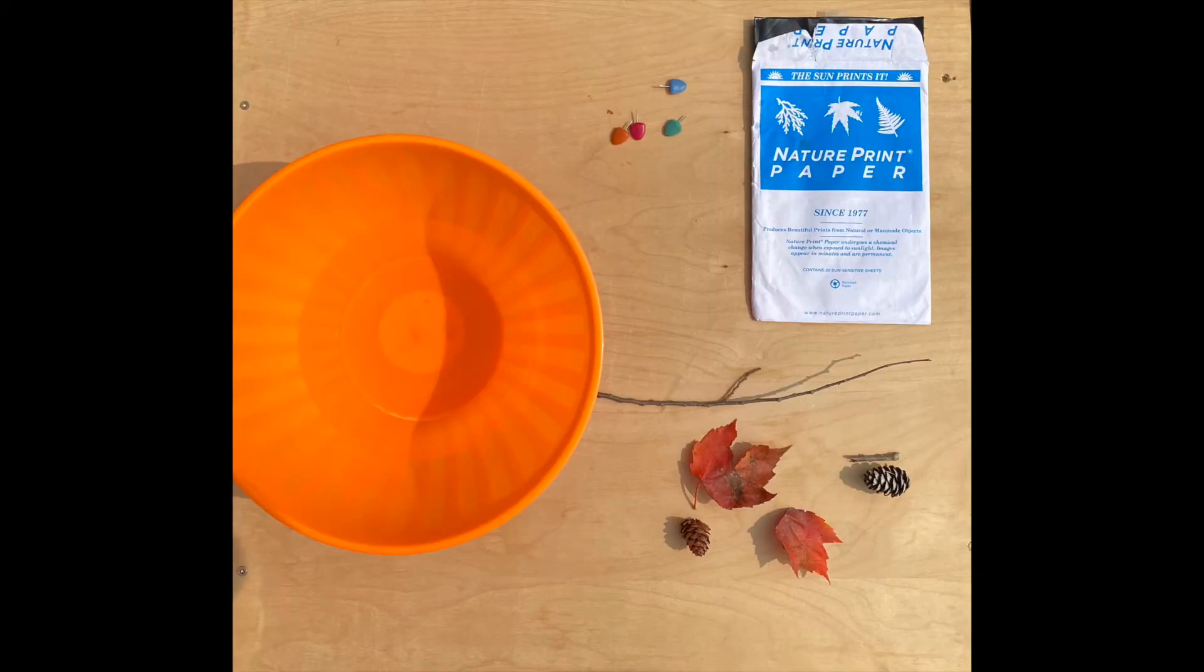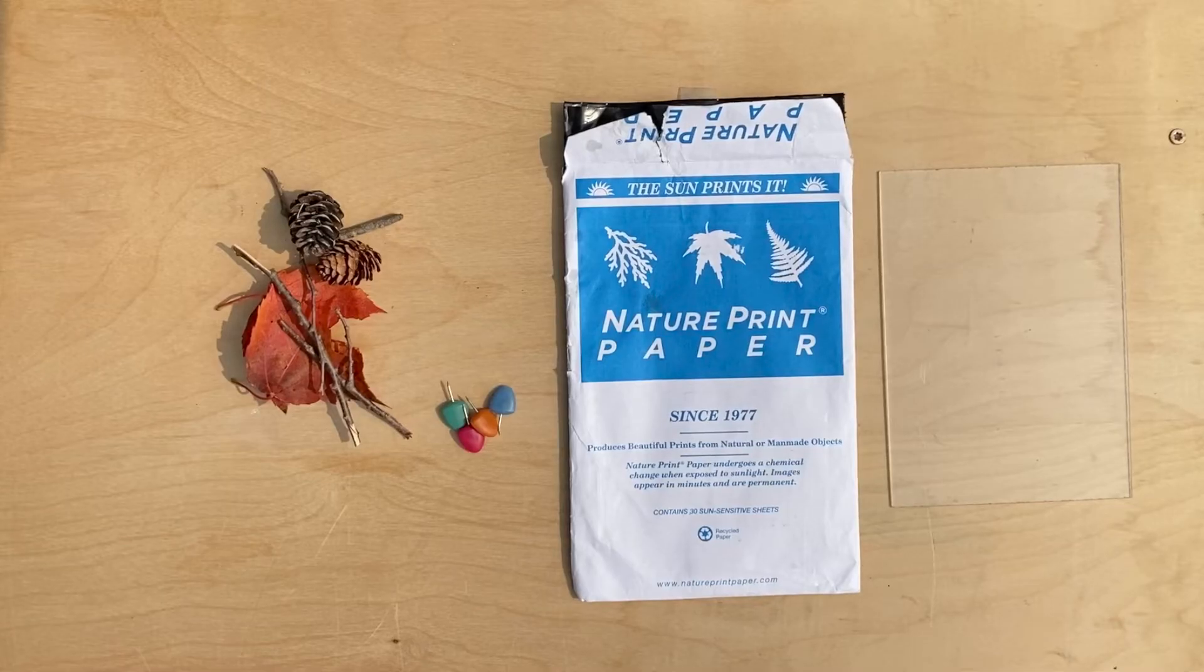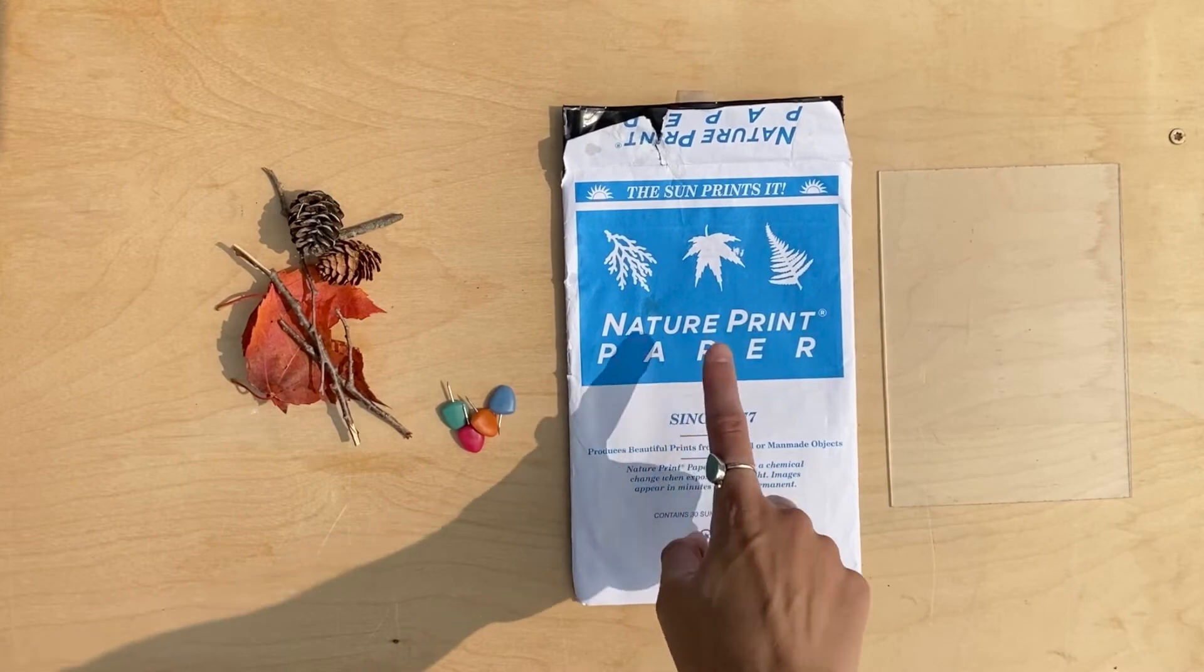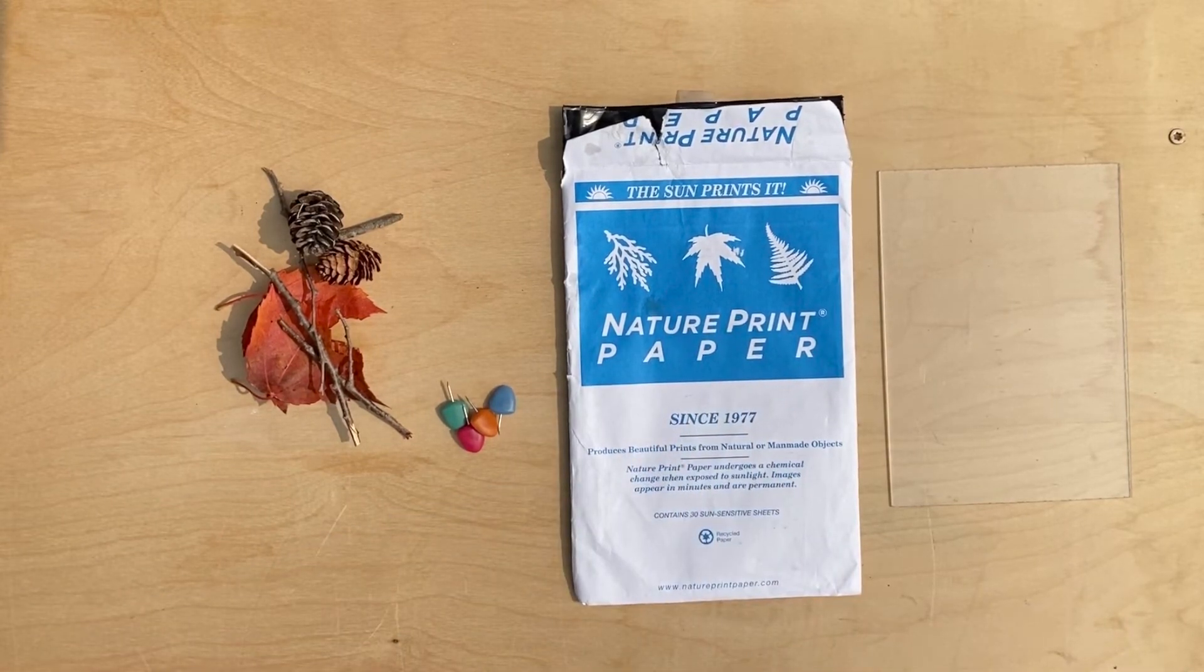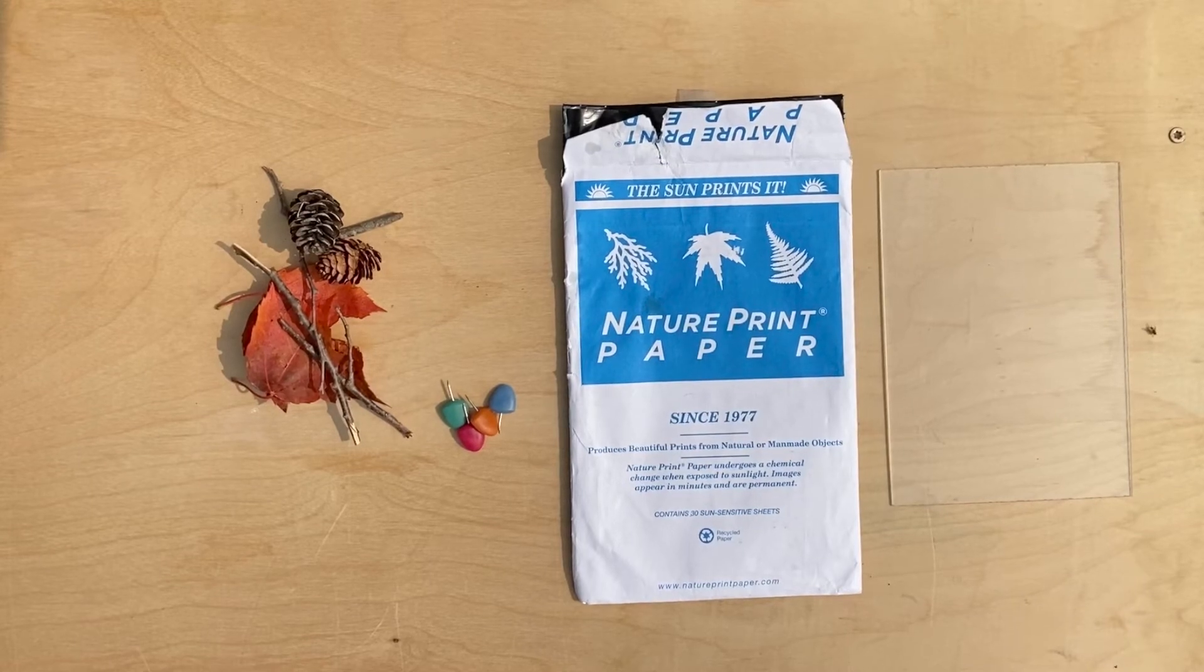All right, we're ready to get started. We are going to be doing a really fun craft using nature paper. Nature paper is a dark blue piece of paper, but it fades when you put it out in the sun.